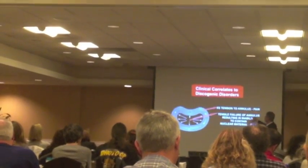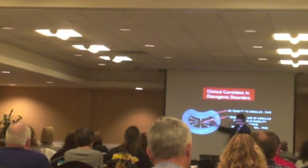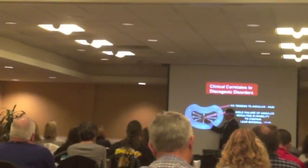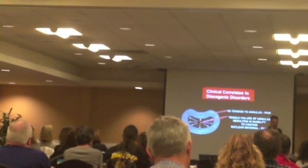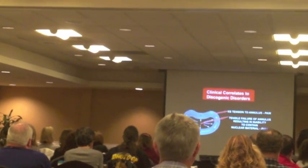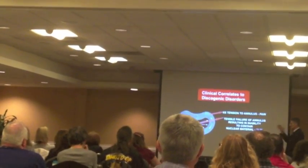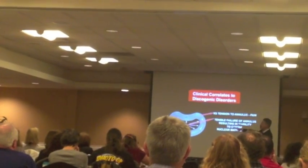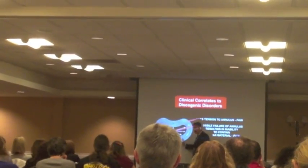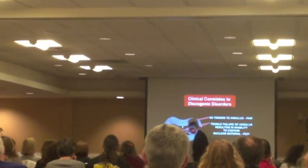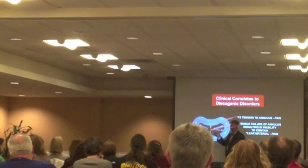The tension failure of the annulus results in the inability to contain the nuclear material, which can then work its way through. There's a great misunderstanding regarding nuclear mechanics — the nucleus doesn't move preferentially backward or forward with different positions, like a jelly in a jelly dome.